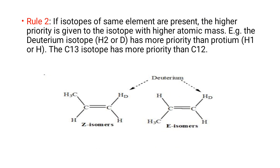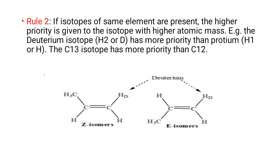Rule 2: If isotopes of the same element are present, higher priority is given to the isotope of higher atomic mass. For example, deuterium has higher priority than protium (hydrogen-1), and carbon-13 has higher priority than carbon-12.